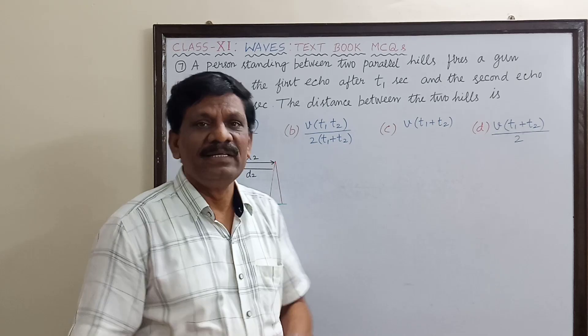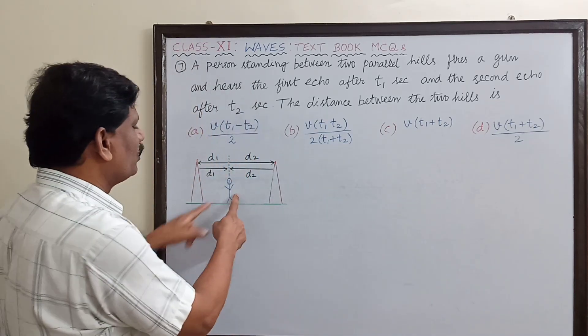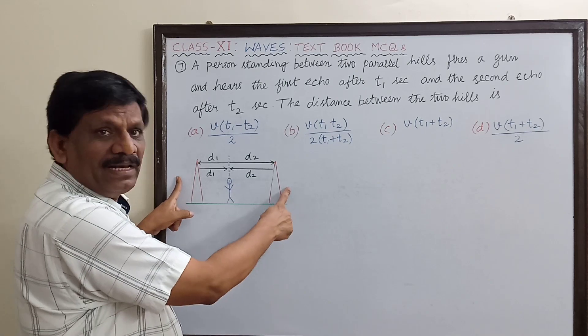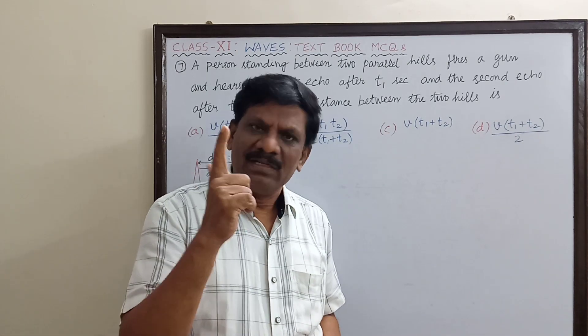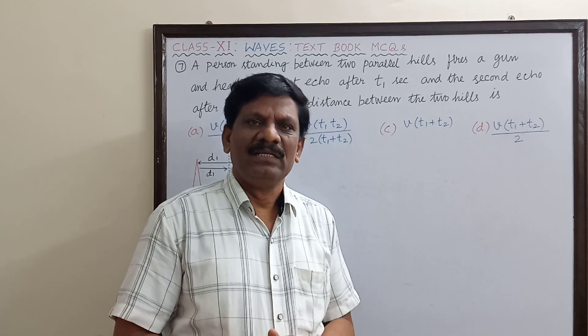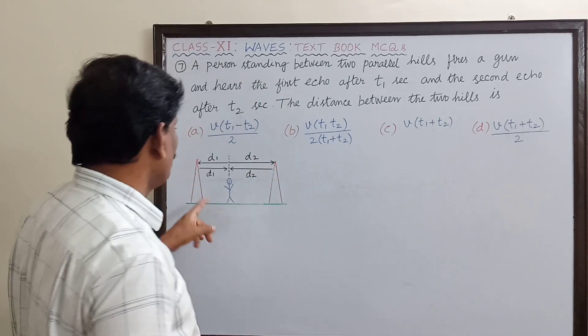It's a very interesting question. Now imagine this is the person who is standing between two hills. So when he shoots or fires the gun, two echoes are heard. One sound is due to the echo from the left side hill.